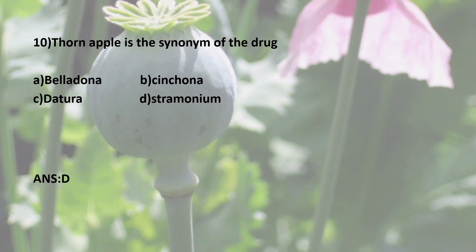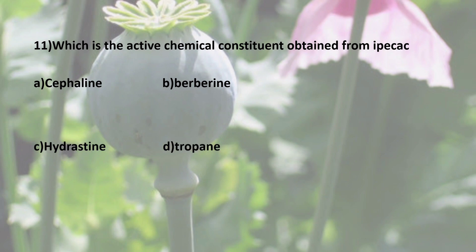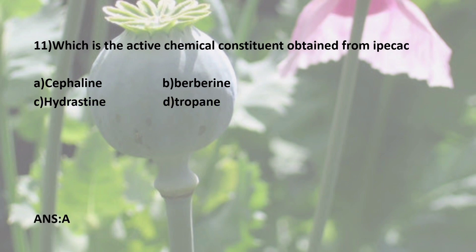Eleventh question: Which is the active chemical constituent obtained from Ipecac? Options are: A) Cephaline, B) Berberine, C) Hyrastine, D) Tropane. The botanical name is Cephaelis ipecacuanha. The correct answer is A — Cephaline is the active chemical constituent obtained from Ipecac.